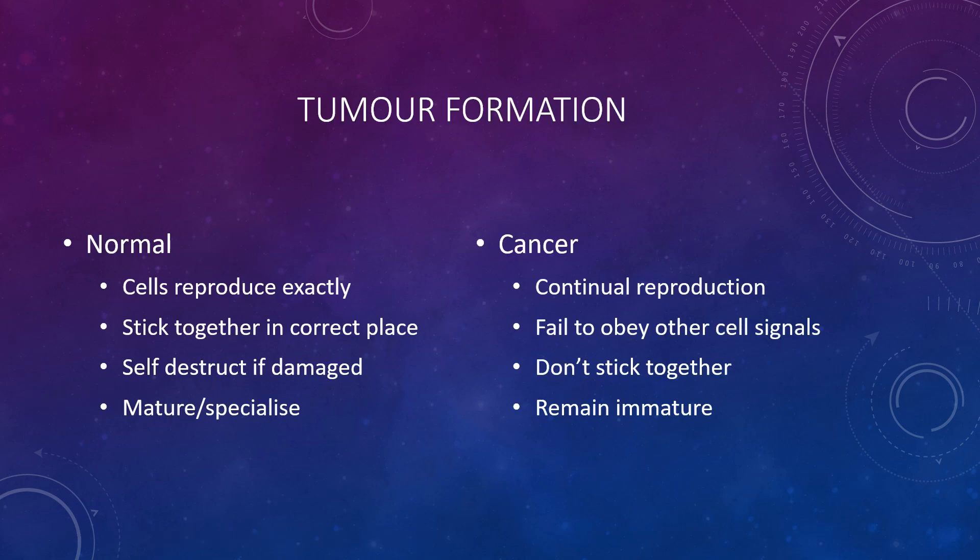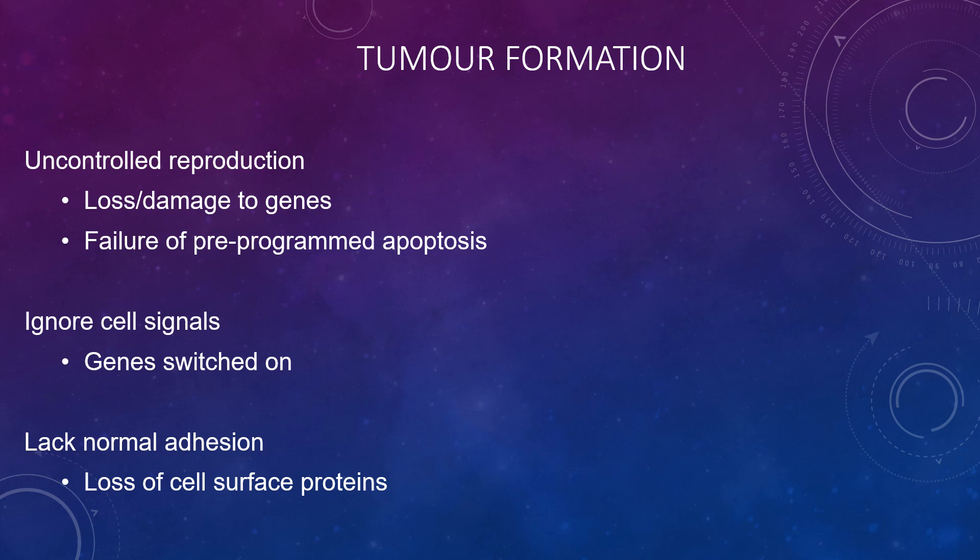Looking at tumour formation and the difference between normal cells and cancer cells: normal cells reproduce exactly and stick together in the correct place. They are self-destructive when damaged and they mature and specialise. Cancer cells, by contrast, continually reproduce, fail to obey other cell signals, don't stick together, and remain immature.